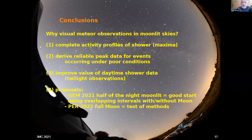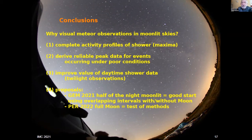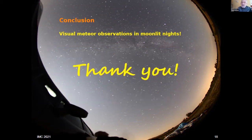Why observe under these conditions? First, to complete shower activity profiles; second, to derive peak data for events like Perseid filaments; and also to improve the value of daytime shower data, which are also taken under poor observing conditions. These two upcoming events — the Geminids and Perseids — may help shed light on this problem. After all this time with visual observations where everybody thought everything was solved, there are still things to do and to improve. I hope for as many observations as possible — thank you.